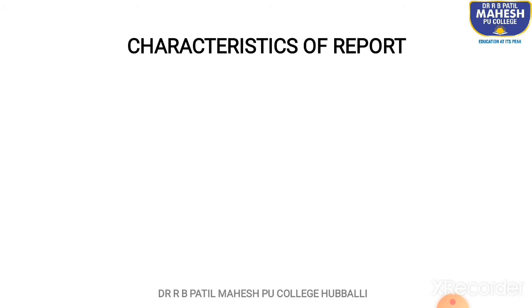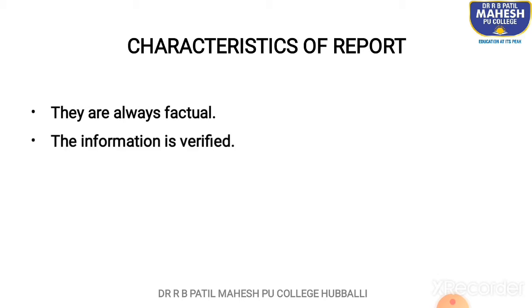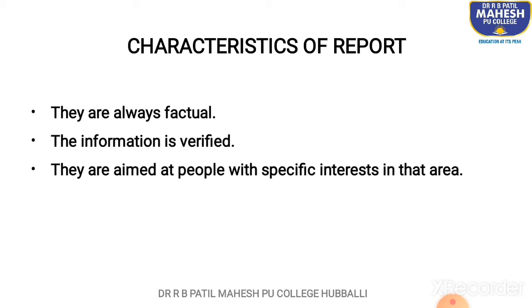Characteristics of a report. They are always factual — reports are always based on facts. The information is verified; when you write a report, you write it on the basis of information which is verified. It cannot be something you are not sure of. Next, they are aimed at people with specific interests in that area — for example, a report on science is read by people interested in science, technology, or current affairs.